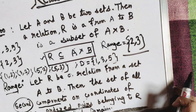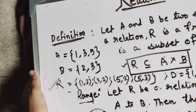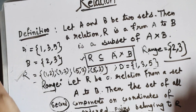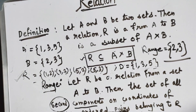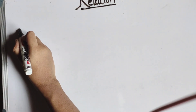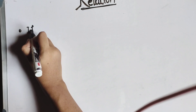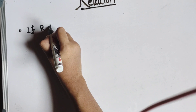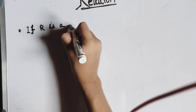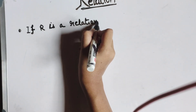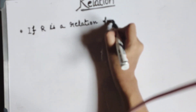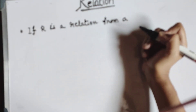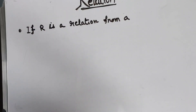Now what is co-domain? Before clearing the board, I should teach you a short note that is very important for your exam. If R is a relation from a non-void set A to a non-void set B — we will discuss void and non-void sets shortly.